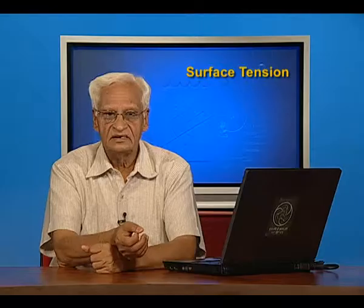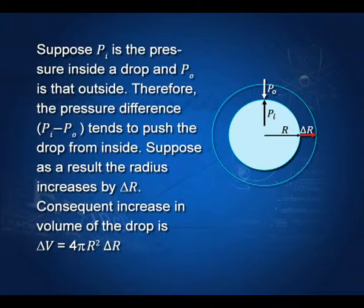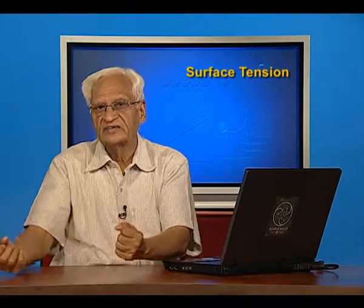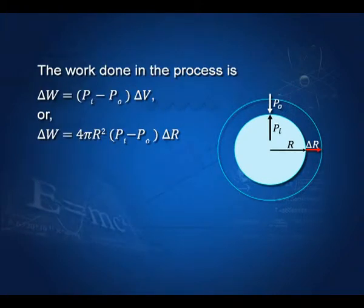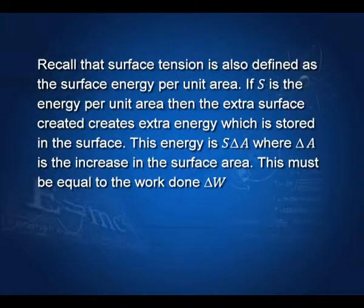How much higher is the pressure inside? Let us calculate. Suppose we have a bubble where P_i is the pressure inside, P_o is the pressure outside, and r is the radius of this bubble. Since the pressure inside is higher, it keeps pressing on its surface and tries to expand it. If the expansion takes place by delta r, then the increase in volume is 4πr² δr, and the work done is the pressure difference times the volume change: 4πr² (P_i − P_o) δr. Recall that surface tension is also defined as surface energy per unit area.